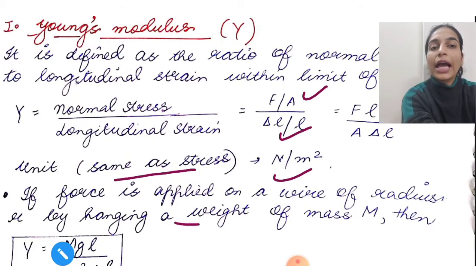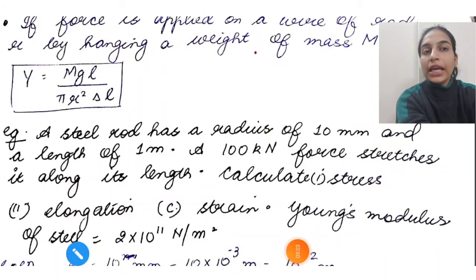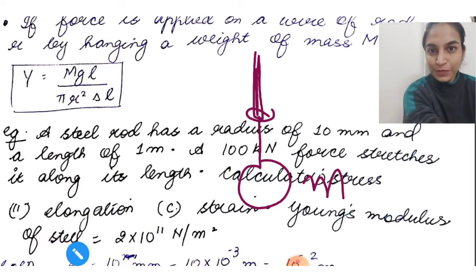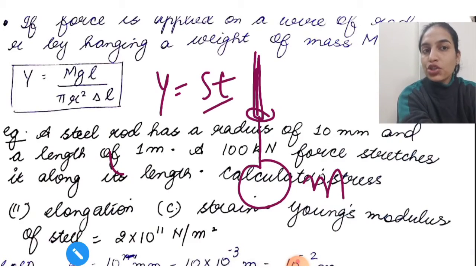Let's derive a general formula. If force is applied on a wire of radius r by hanging a weight of mass m, then you have a wire with radius r and a mass m hanging below.